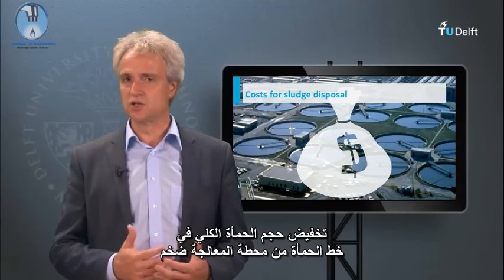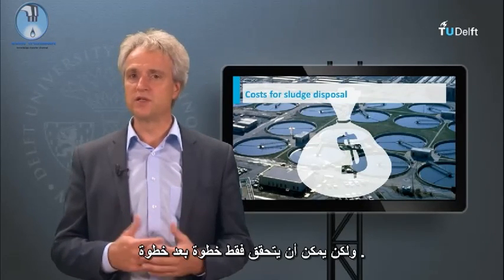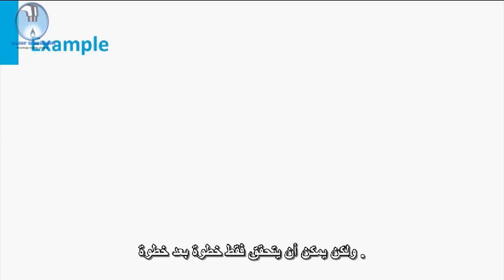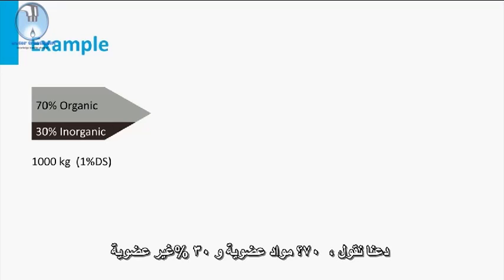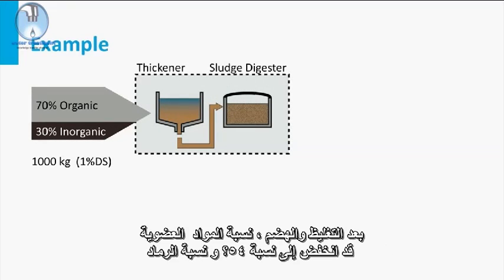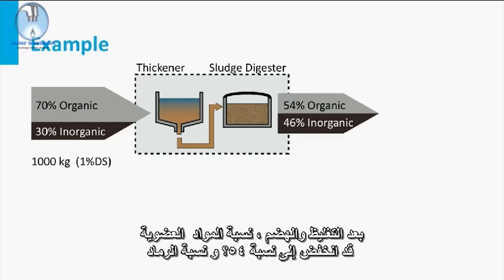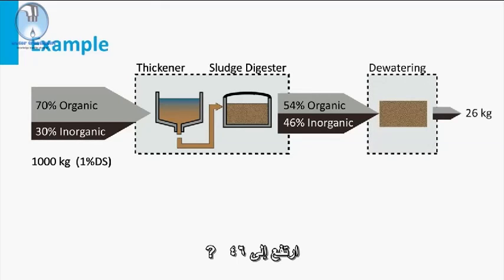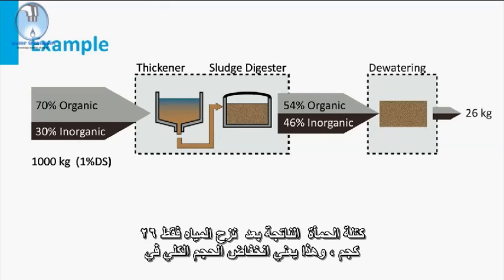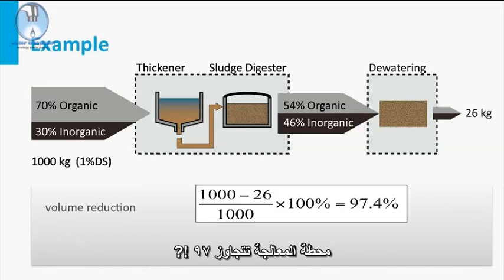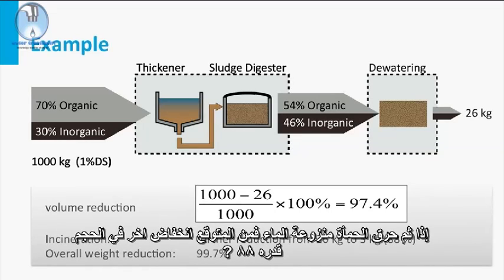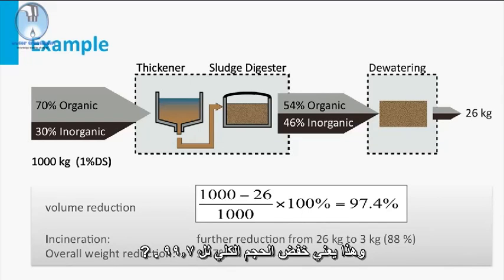The overall sludge volume reduction in the sludge line of the treatment plant is huge, but can only be achieved step by step. For example, at the start, a sludge stream of 1,000 kg has 1% dry solids, of which 70% is organic and 30% is inorganic. After thickening and digestion, the organic fraction has dropped to 54% and the ash fraction has increased to 46%. Dewatering results in a sludge mass of only 26 kg, meaning a total volume reduction at the treatment plant exceeding 97%. If the dewatered sludge is then incinerated, a further volume reduction of 88% is expected, meaning a total volume reduction of 99.7%.